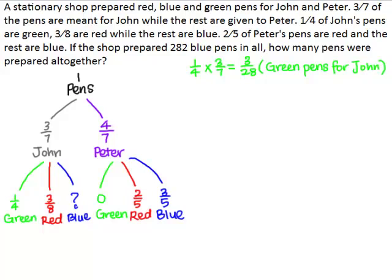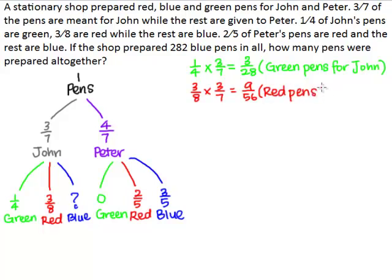Next, to find the fraction of all the pens that are John's red pens, we will take three over eight — because three over eight of John's pens are red — and three over seven of all the pens belong to John. So three over eight times three over seven gives us nine over fifty-six. And so nine over fifty-six of all the pens are John's red pens.